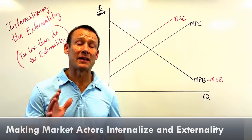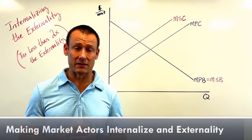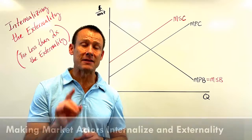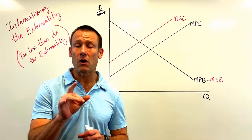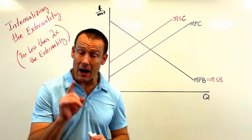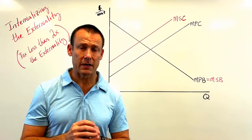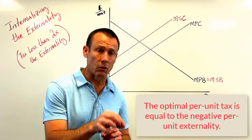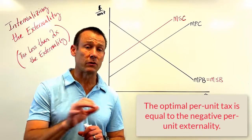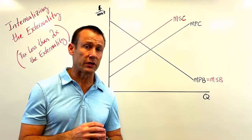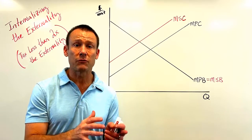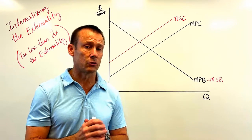In this video we're talking about negative externalities and specifically getting market actors to internalize these negative externalities. We're also going to talk about the optimal per unit tax, which is a per unit tax equal to the size of the per unit externality. That's your optimal per unit tax, which will get rid of all the deadweight loss associated with the externality. But if you can't get that, is it okay if we tax a little bit too much or a little bit too little?